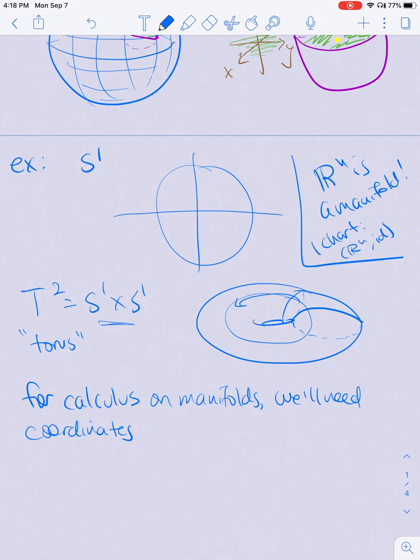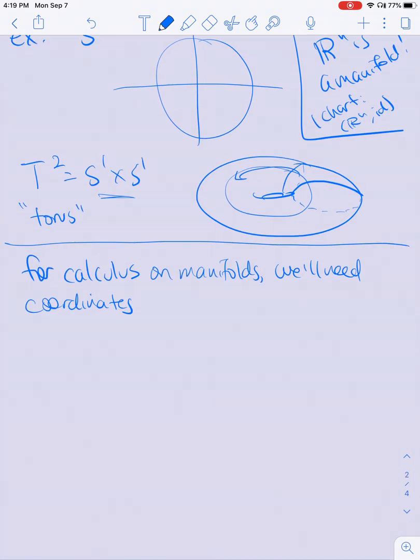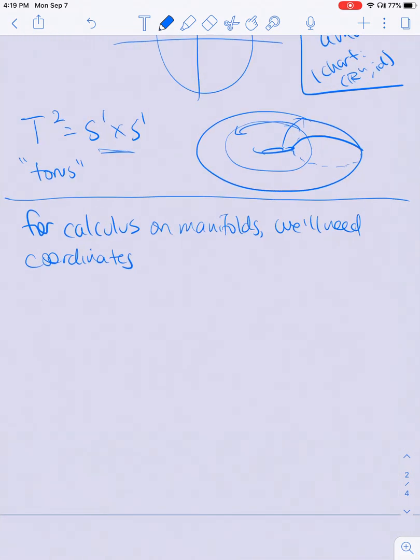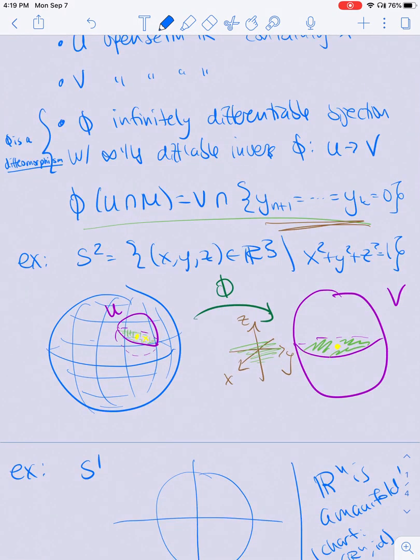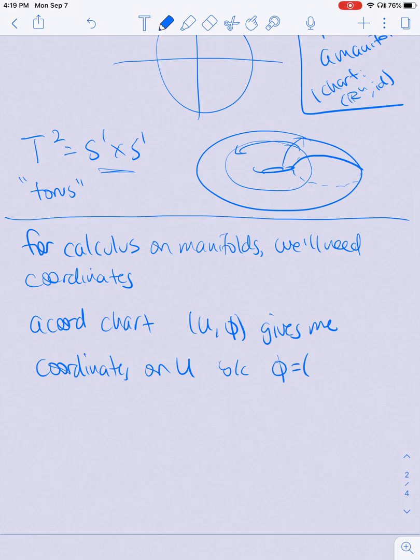For calculus on manifolds we're going to need coordinates, and essentially the idea is that every coordinate chart is really just equivalent to some set of k functions, and the first n of those give us coordinates on our manifold. So if I have a coordinate chart u, phi, it gives me coordinates on u. It might not give me coordinates on the whole thing—clearly S^2 is not R^2—but it will give me coordinates on this small patch here.